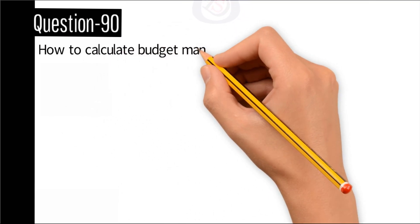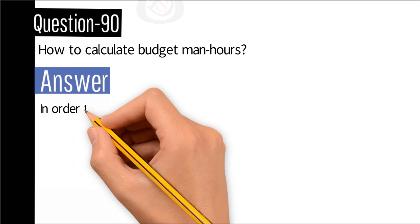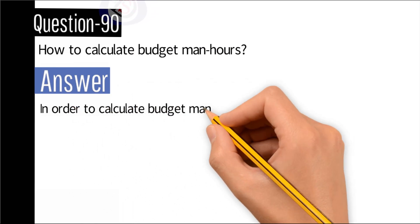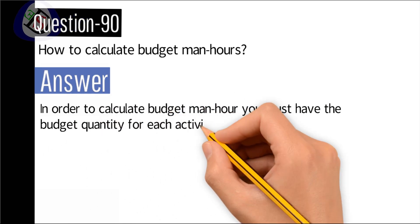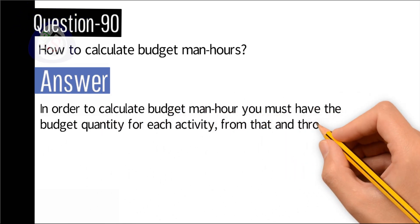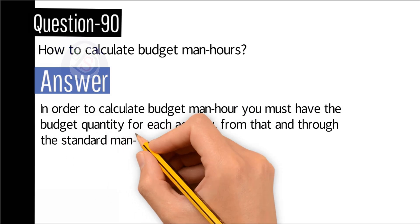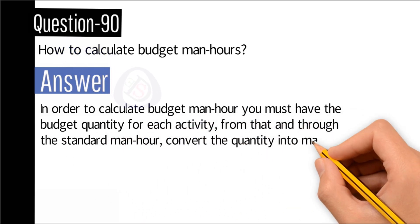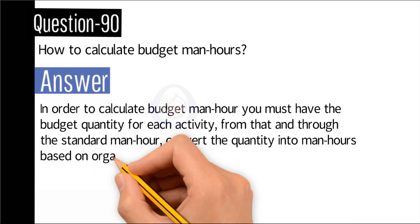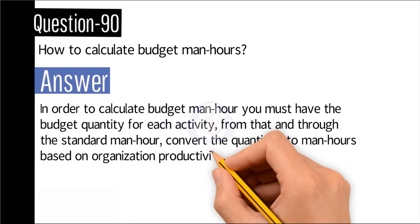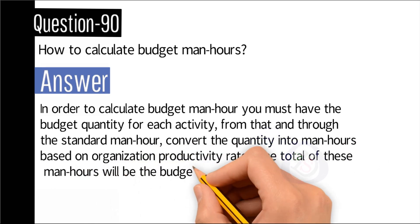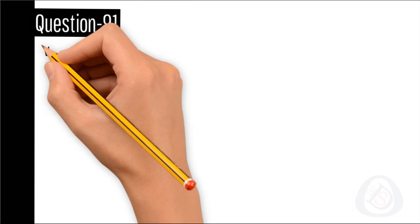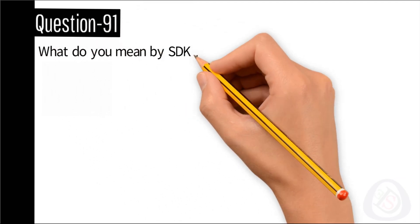Question number 90: How to calculate budget man-hours? Answer: In order to calculate budget man-hours, you must have the budget quantity for each activity. From that, and through the standard man-hour, convert the quantity into man-hours based on organization productivity rates. The total of these man-hours will be the budgeted man-hours.